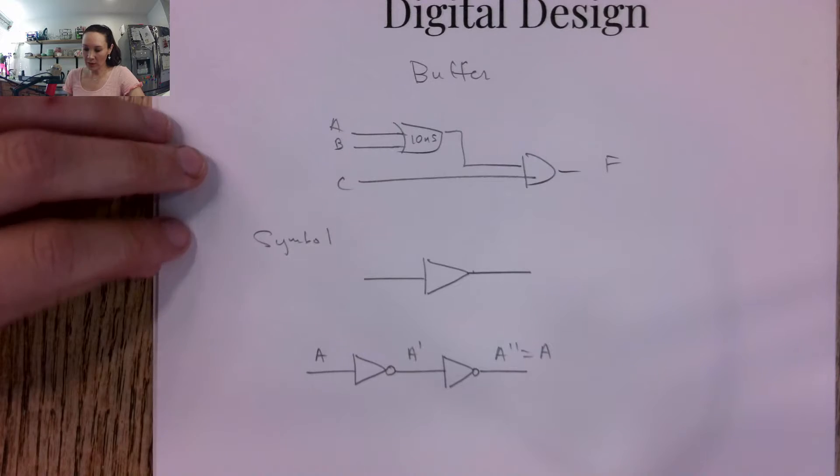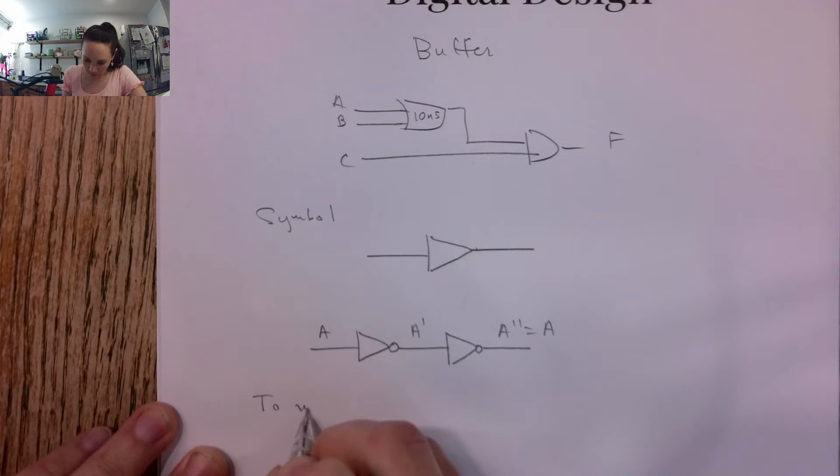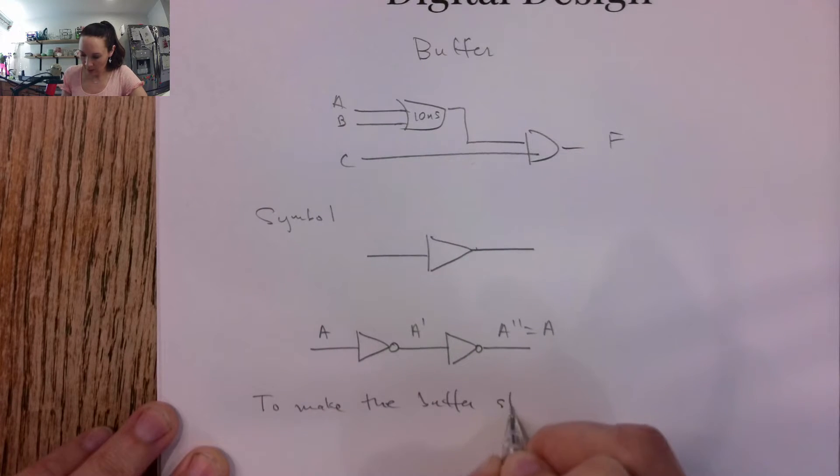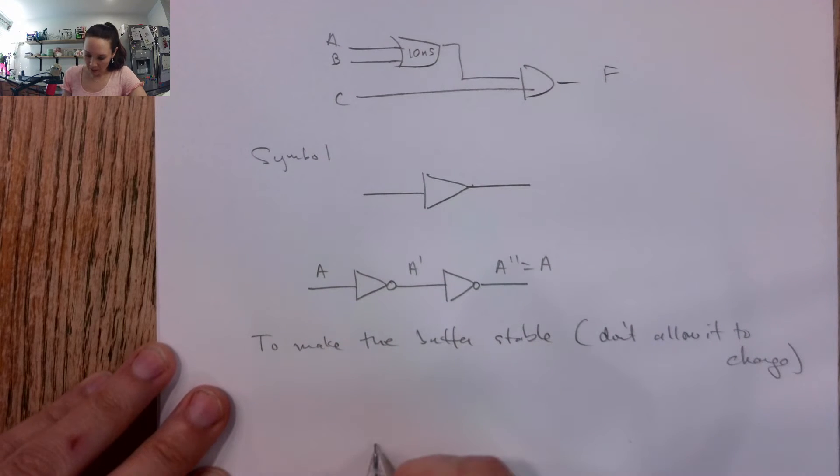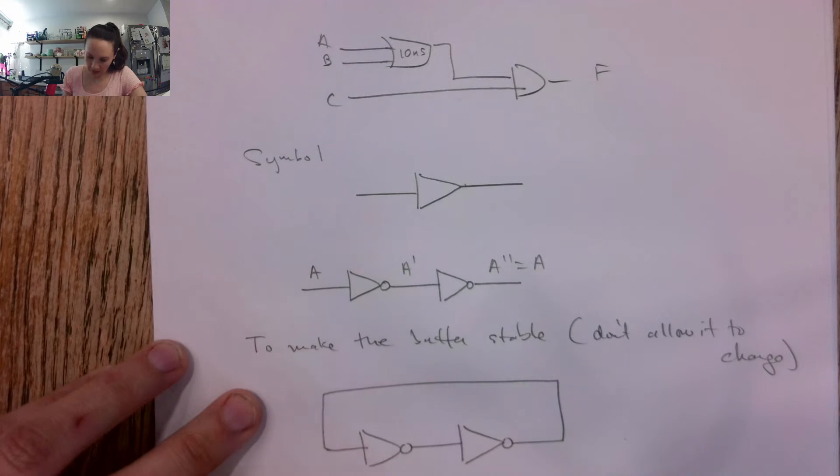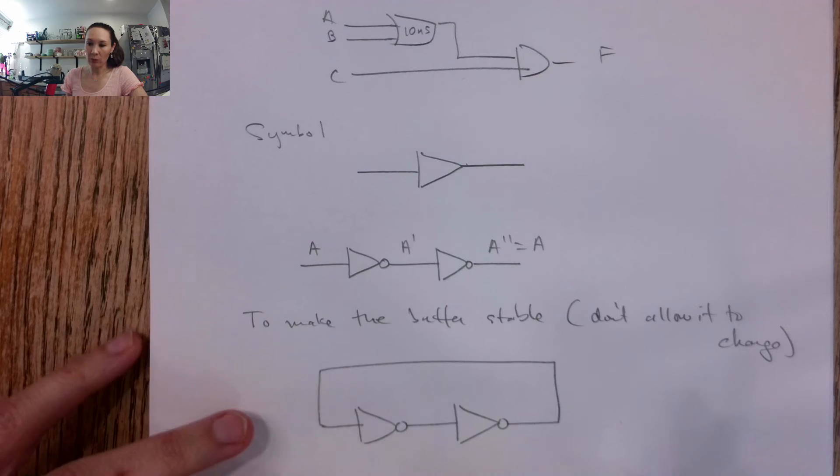And if we want to ensure that this doesn't change, so we want to make this stable, to make the buffer stable, we can hook it up in a feedback loop. So it looks like this. We tie the output to the input. And this actually constitutes a very simple memory device.